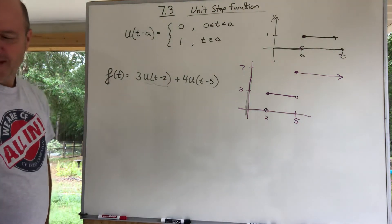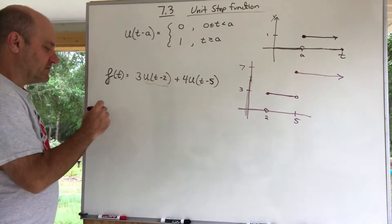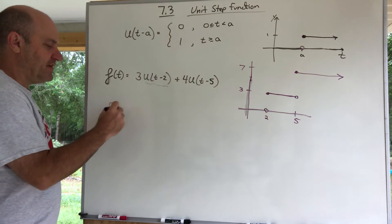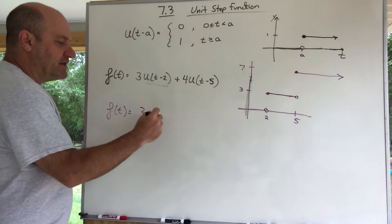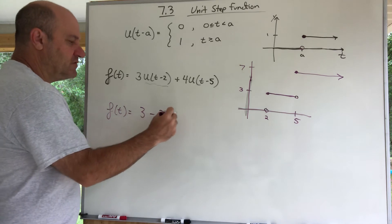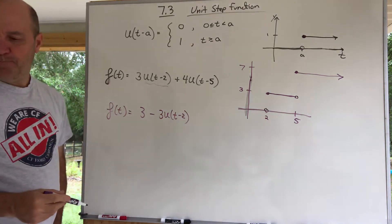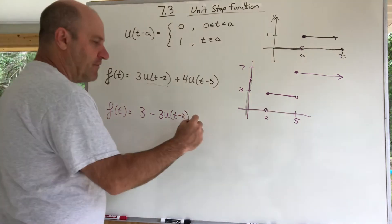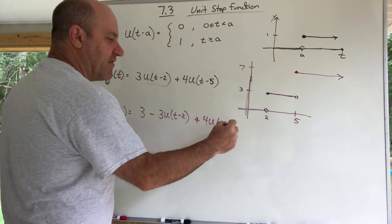Let's try another one. What if f(t) equals 3 minus 3·u(t - 2) plus 4·u(t - 5)?